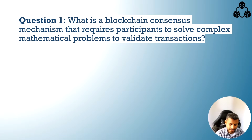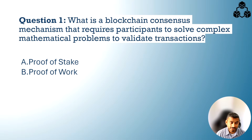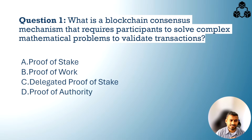Here are your options. Is it A. Proof of Stake? B. Proof of Work? C. Delegated Proof of Stake? Or is it D. Proof of Authority?